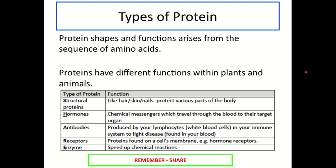First, we're going to look at the different types of protein. The first key point is that the shape of proteins is essential. Their shape allows them to carry out their specific function, and their shape and functions are therefore determined by the sequence of the subunits that make them up — in this case, amino acids. Proteins have different functions within plants and animals, and these functions can be split into five main types.